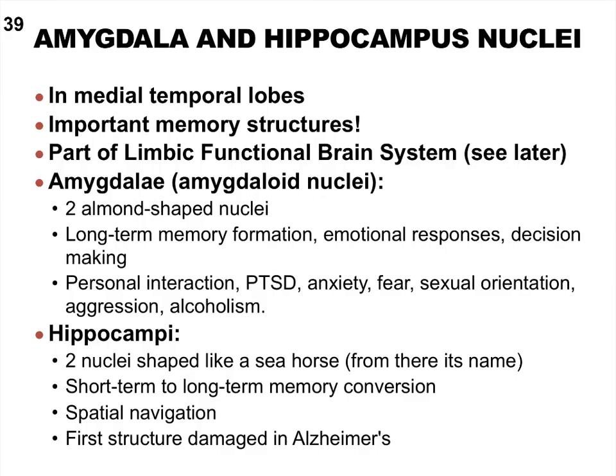When you hear amygdala or hippocampus, right away you should remember they deal with memory formation. Both are involved in long-term memory formation, and the hippocampus is especially important in converting short-term memory into long-term memory. These are very important for memory, and they're part of the limbic system.